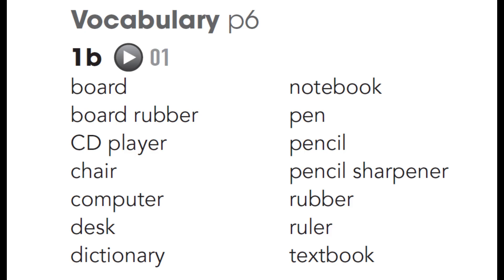Starter Unit Vocabulary Exercise 1b. Board. Board rubber. CD player. Chair. Computer. Desk. Dictionary. Notebook. Pen. Pencil. Pencil sharpener. Rubber. Ruler. Textbook.